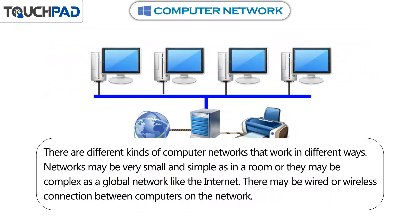There are different kinds of computer networks that work in different ways. Networks may be very small and simple as in a room, or they may be complex as a global network like the internet. There may be wired or wireless connection between computers on the network.